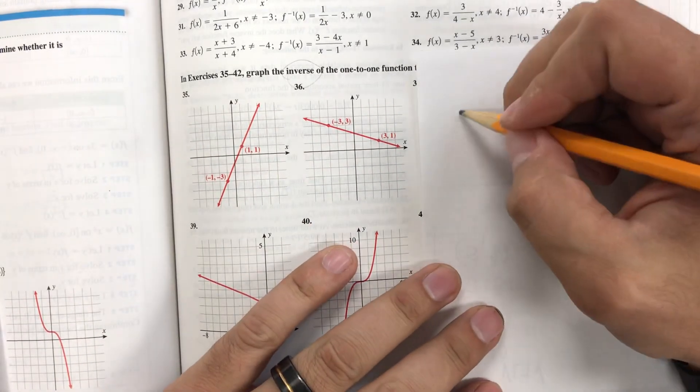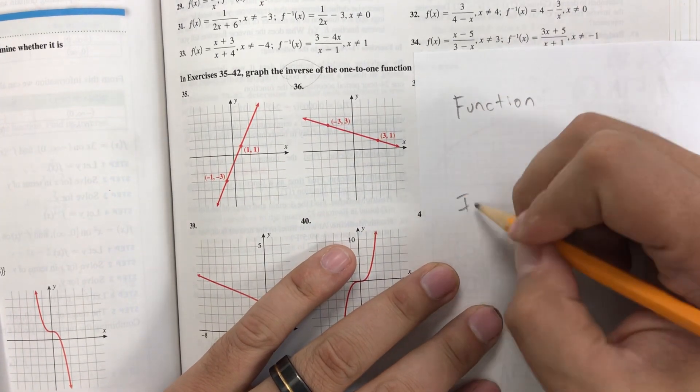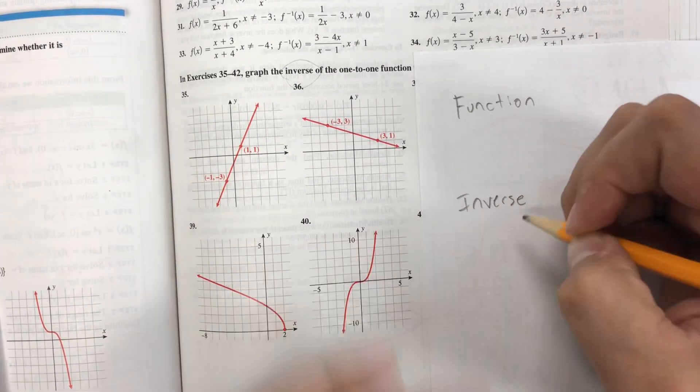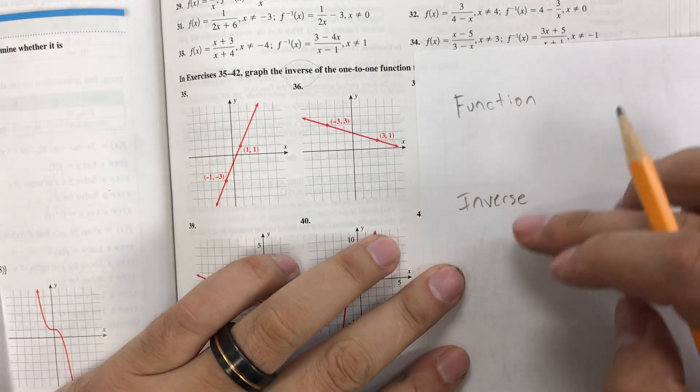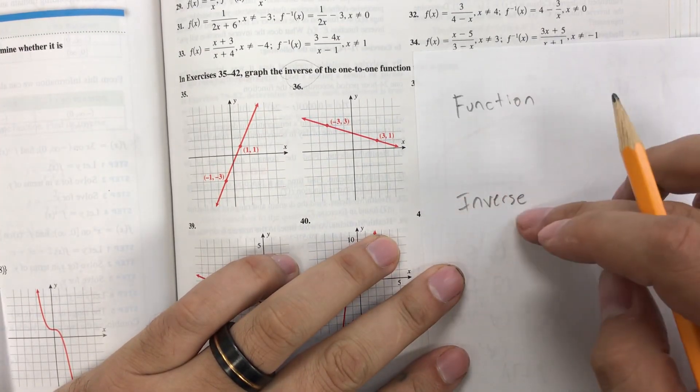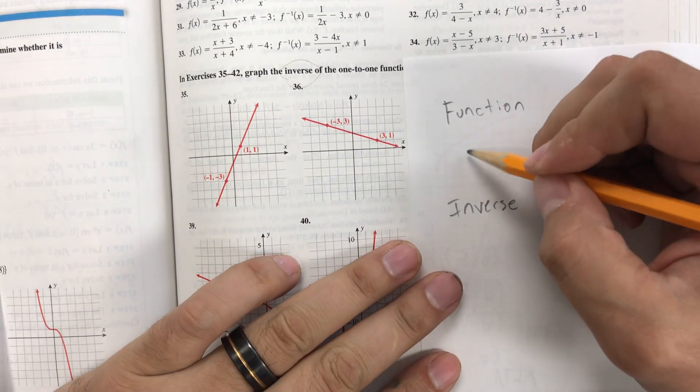First off, with a function and its inverse, since we already know that the function is a function, we know that it's one-to-one as well. Therefore, it has an inverse over the entirety of its domain. And the following will be true.